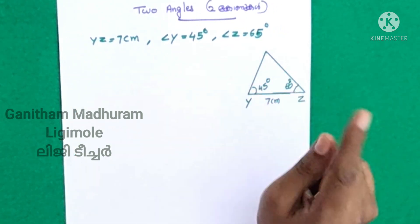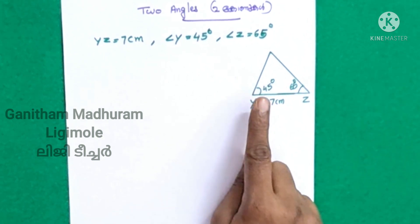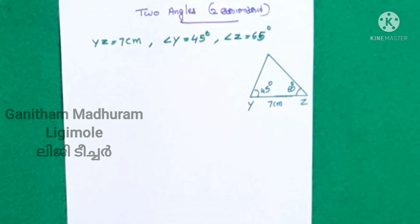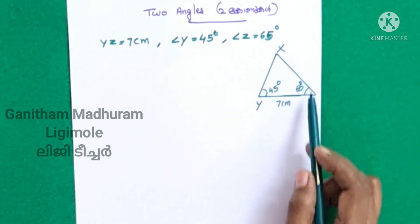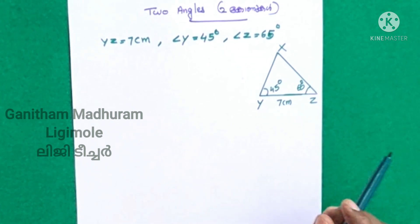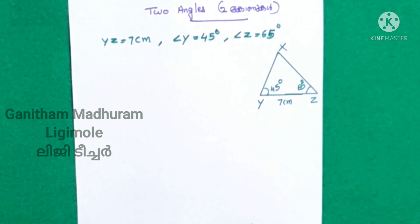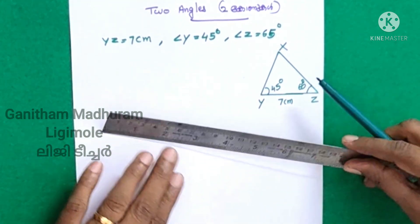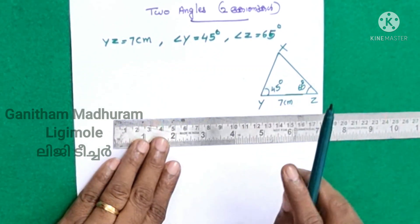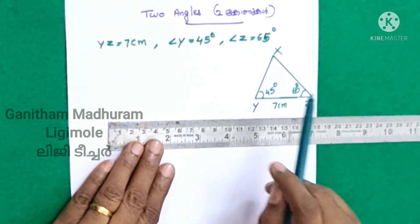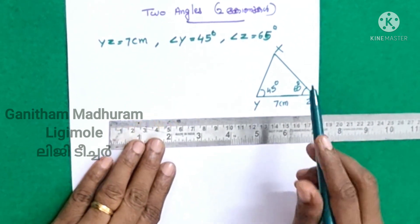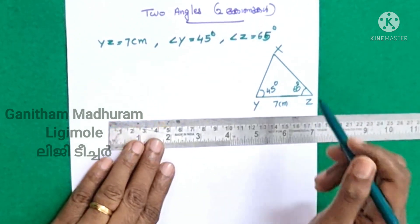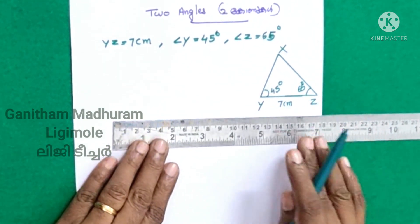We will draw triangle XYZ. I am going to draw a line. YZ is 7 cm. I will draw the triangle on the arch at the time. The angle is 7 cm.